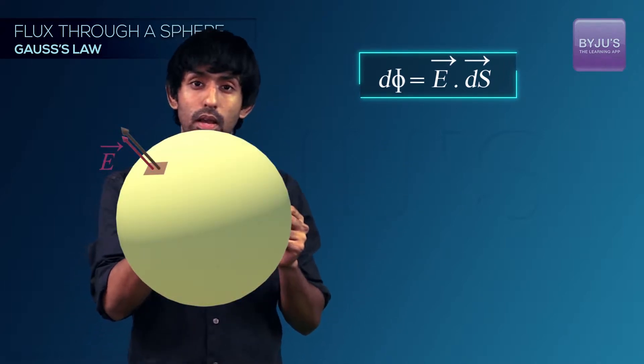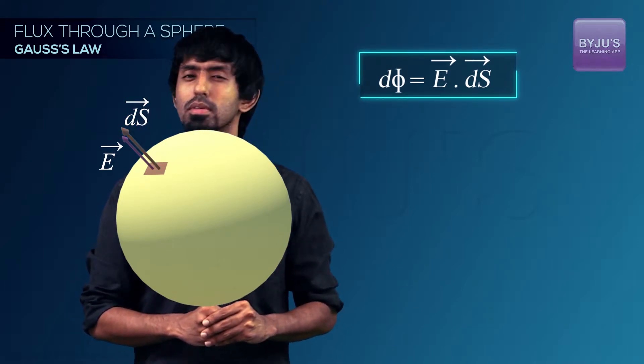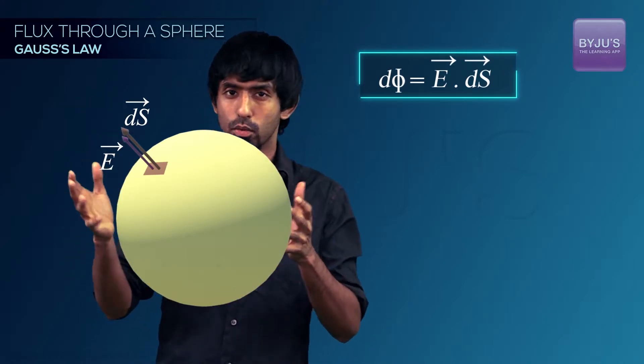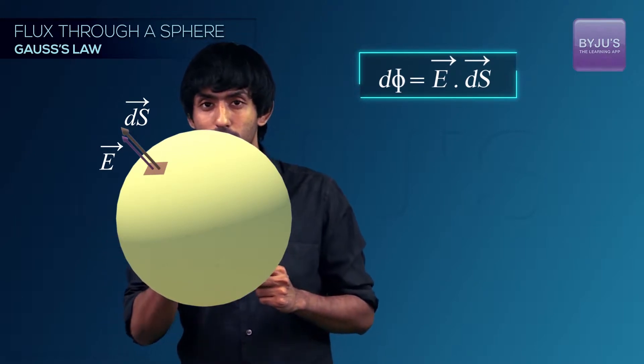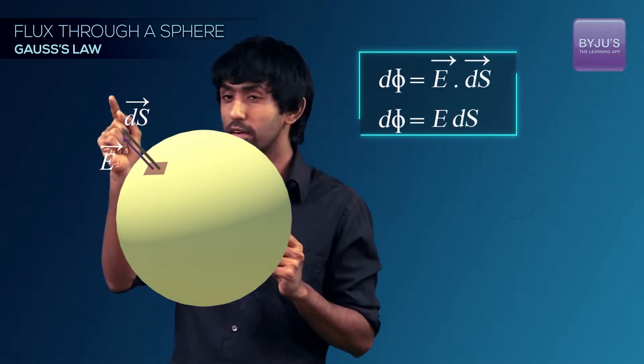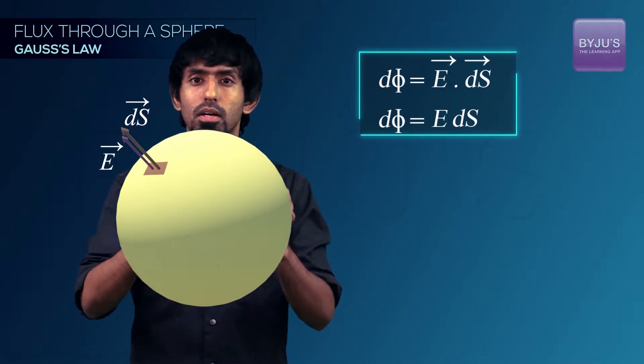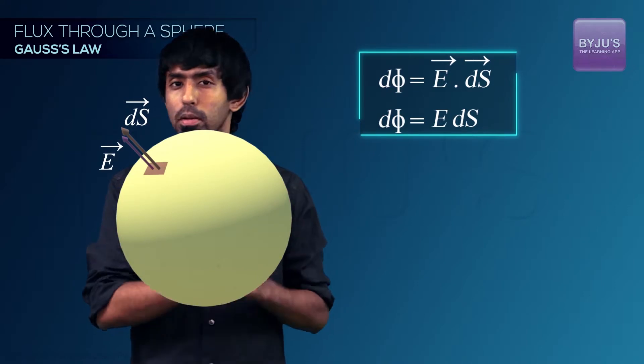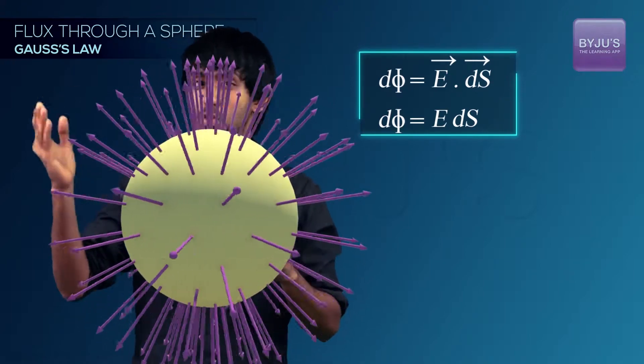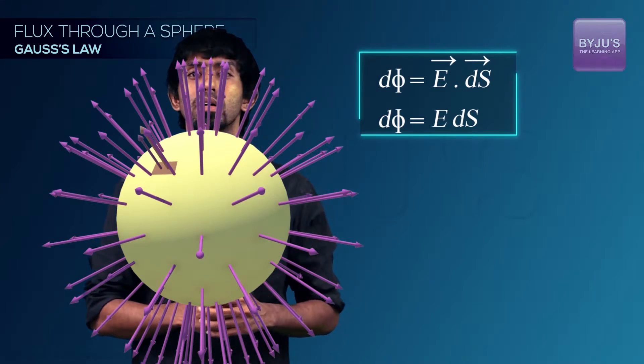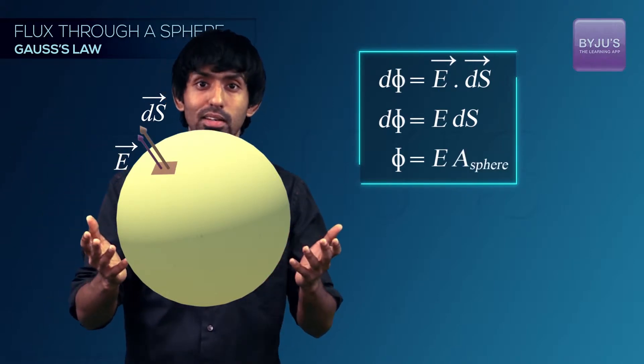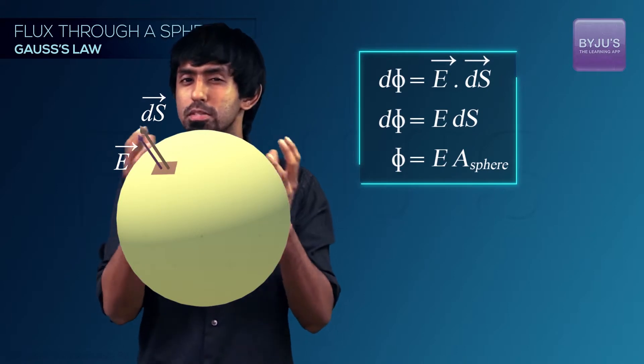Because the angle between E and the area vector is going to be what? So what we can do is calculate the electric field at one of those points and multiply it with the surface area of that sphere. So the problem becomes much simpler because we have chosen a very symmetric sphere in our case.